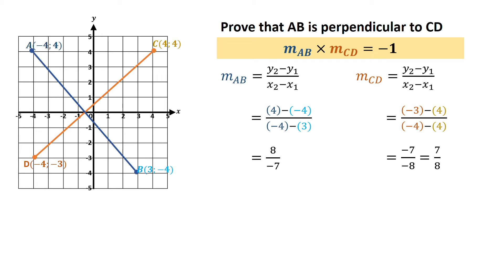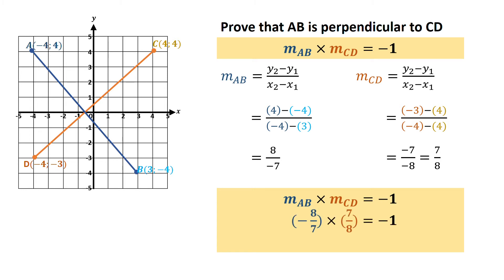So now if I want to show and prove that they are perpendicular, I go back to the formula: the gradient of the one line multiplied by the gradient of the other line equals negative 1. I substitute in the fractions I calculated: negative 8 over 7 multiplied by 7 over 8 should equal negative 1 — and it does equal negative 1. So therefore line AB is perpendicular to line CD.